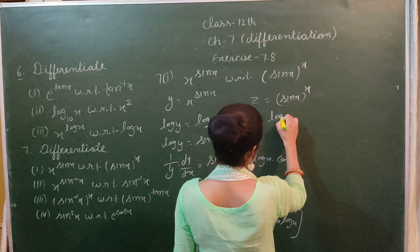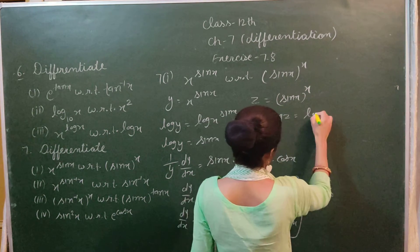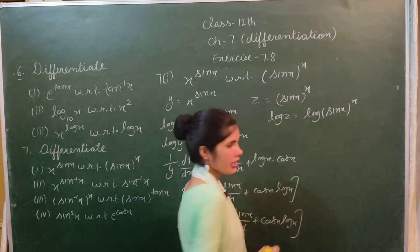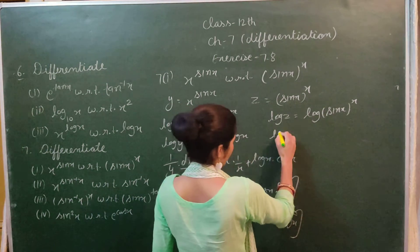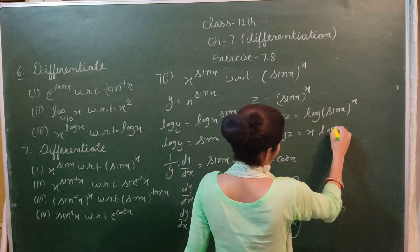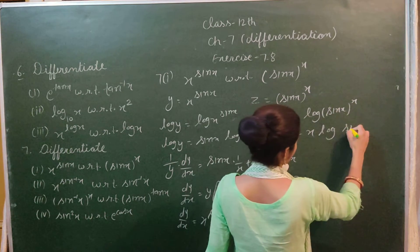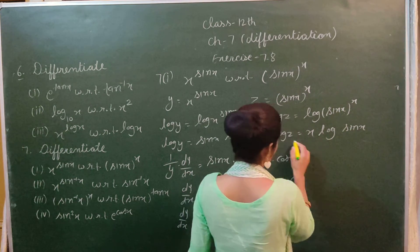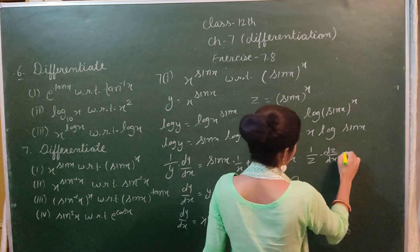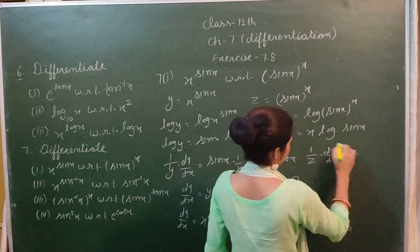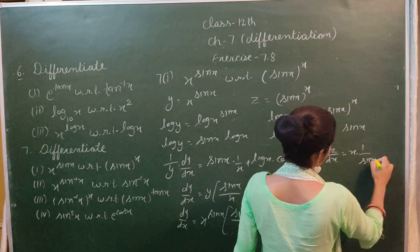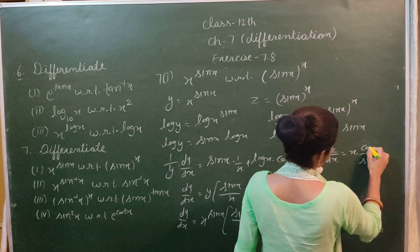Now we differentiate z = (sin x)^x. Taking log on both sides: log z = x times log(sin x). Differentiating with respect to x using the product rule: (1/z)(dz/dx) = x times (cos x / sin x) + log(sin x) times 1.